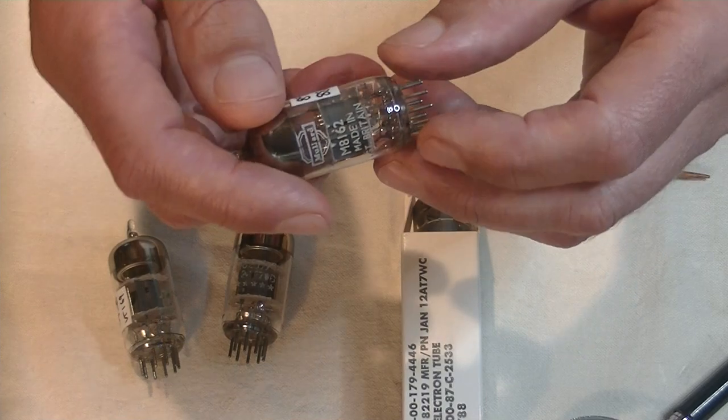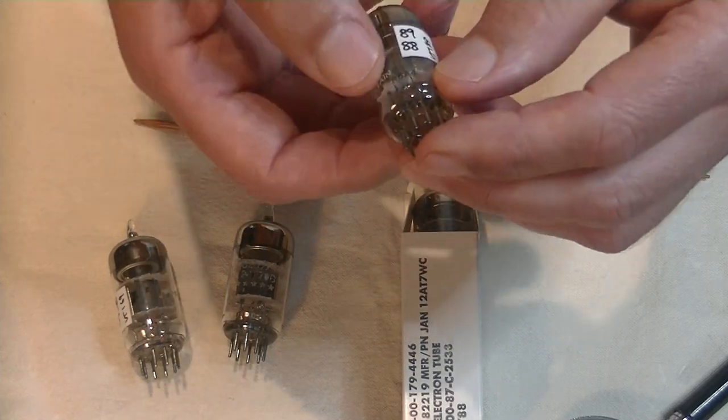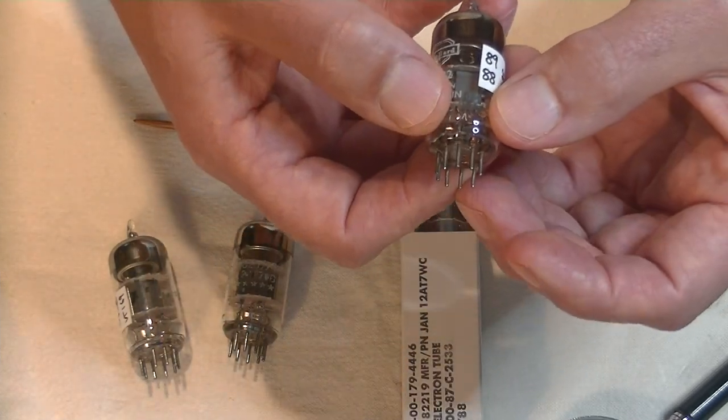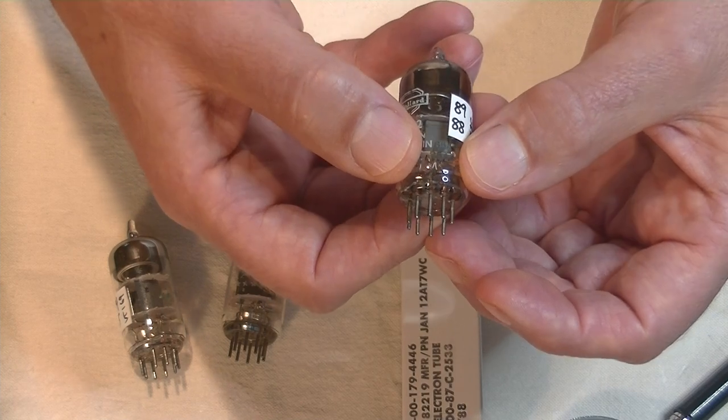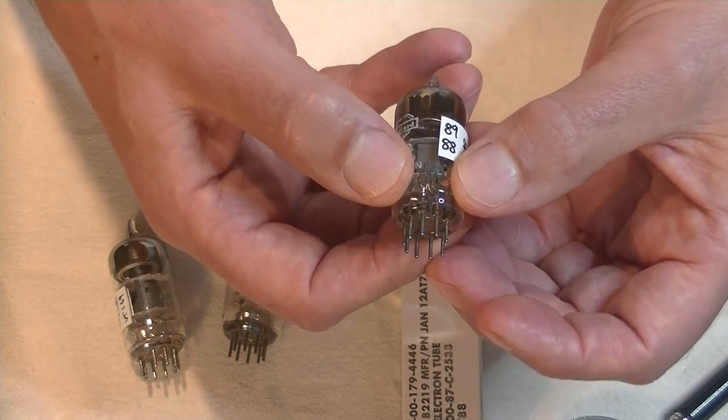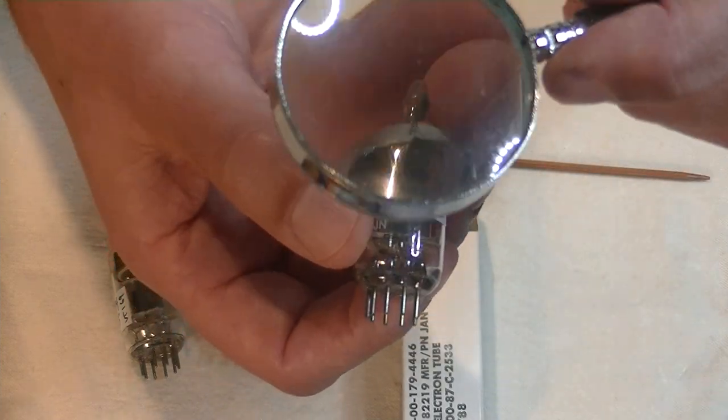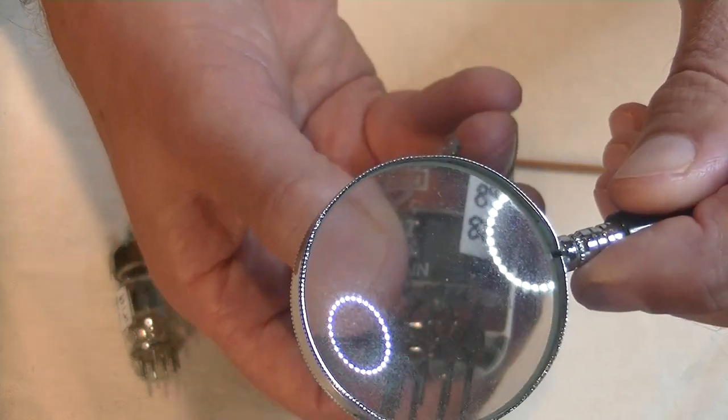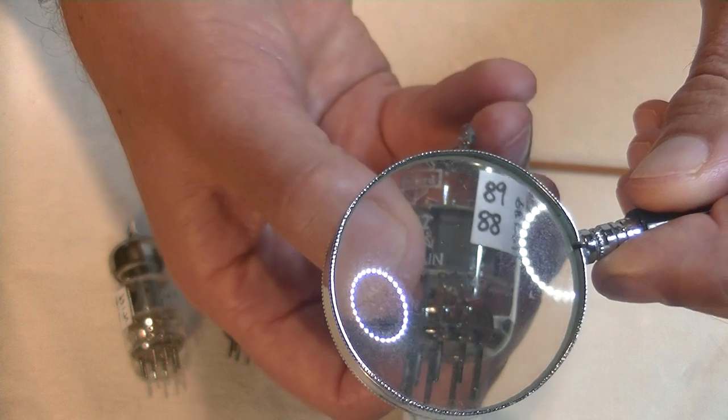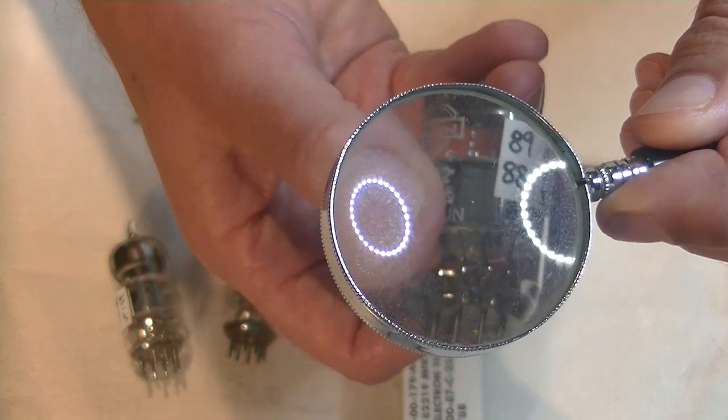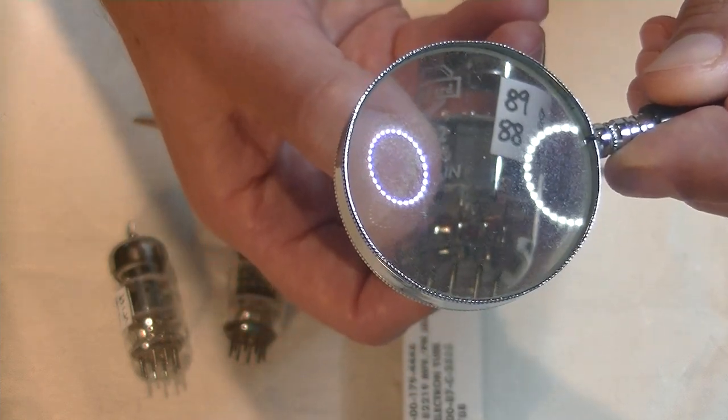But right here on almost all, not all Mullards, and not all European vintage tubes, but many of them, is an acid etched factory code. I don't know if you can see it, folks.